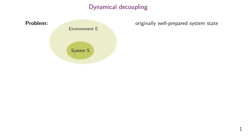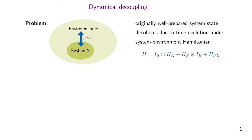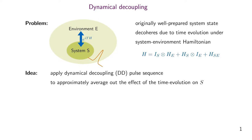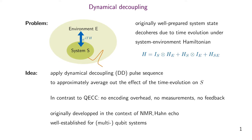Generally in dynamical decoupling we consider the problem of decoherence. Our originally well-prepared system S is coupled to an environment E via some decoherence Hamiltonian that involves some system-environment interactions. The strategy of dynamical decoupling to fight these sources of errors is to rapidly apply so-called dynamical decoupling pulse sequences to the system, in hope to approximately average out the effect of this time evolution onto the system.